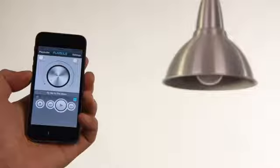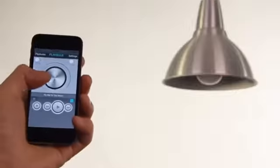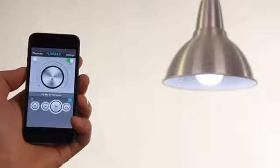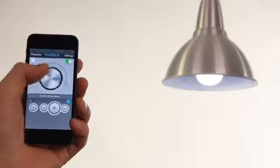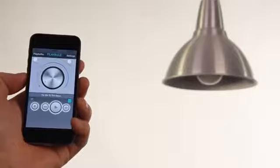What you see is the unique Playbulb app's operation interface. Once your Playbulb is connected you can enter the control page. Through it you can use your device as a remote to control the light, adjust the LED brightness with the knob.